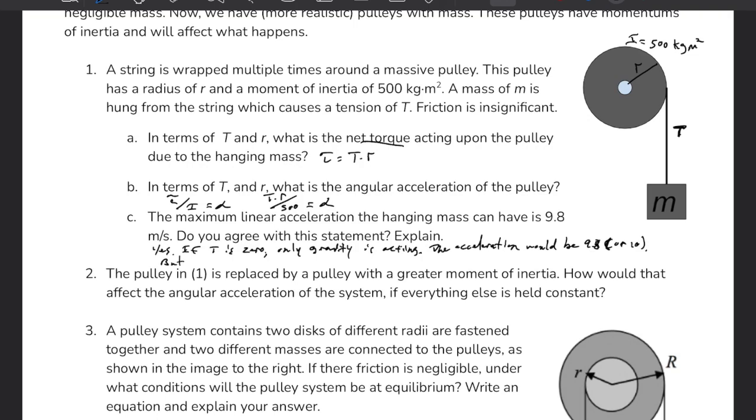The pulley in one is replaced by a pulley with greater moment of inertia. How would that affect the angular acceleration of the system if everything else is held constant?